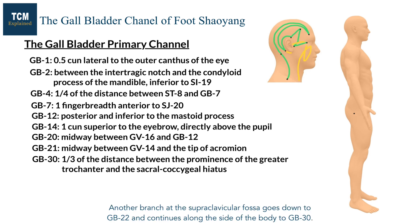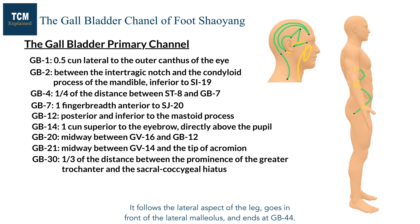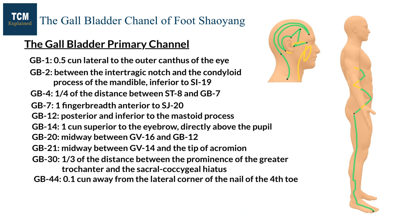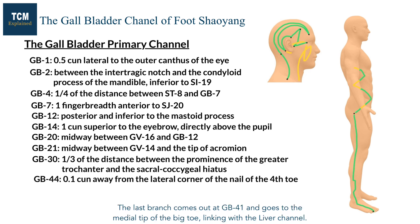Another branch at the supraclavicular fossa goes down to GB22 and continues along the side of the body to GB30. It follows the lateral aspect of the leg, goes in front of the lateral malleolus, and ends at GB44. The last branch comes out at GB41 and goes to the medial tip of the big toe, linking with the liver channel.